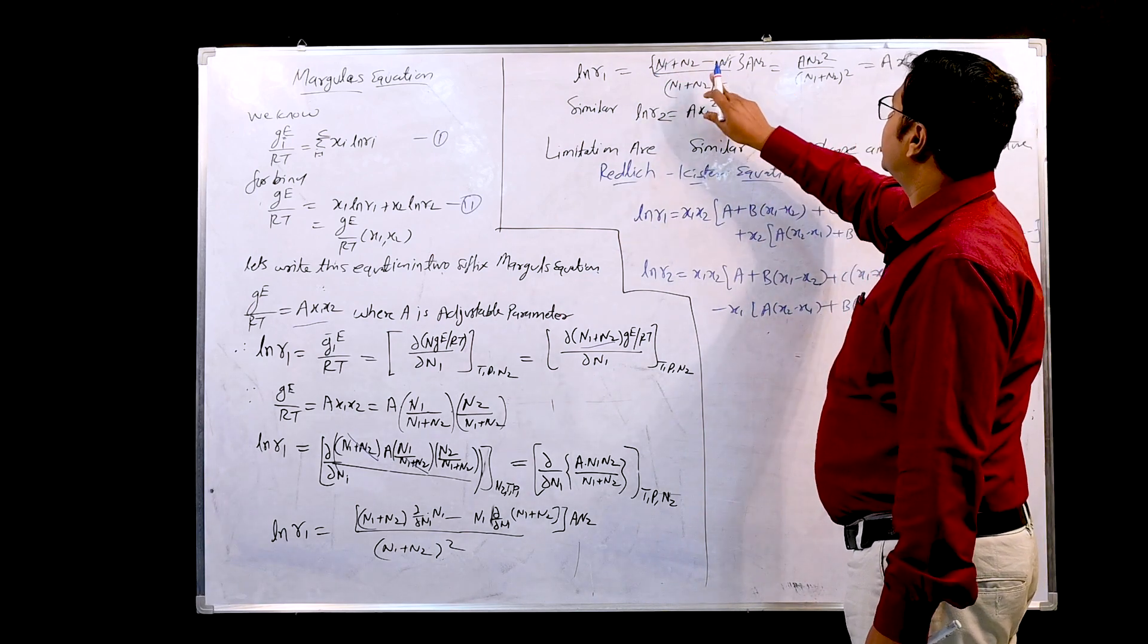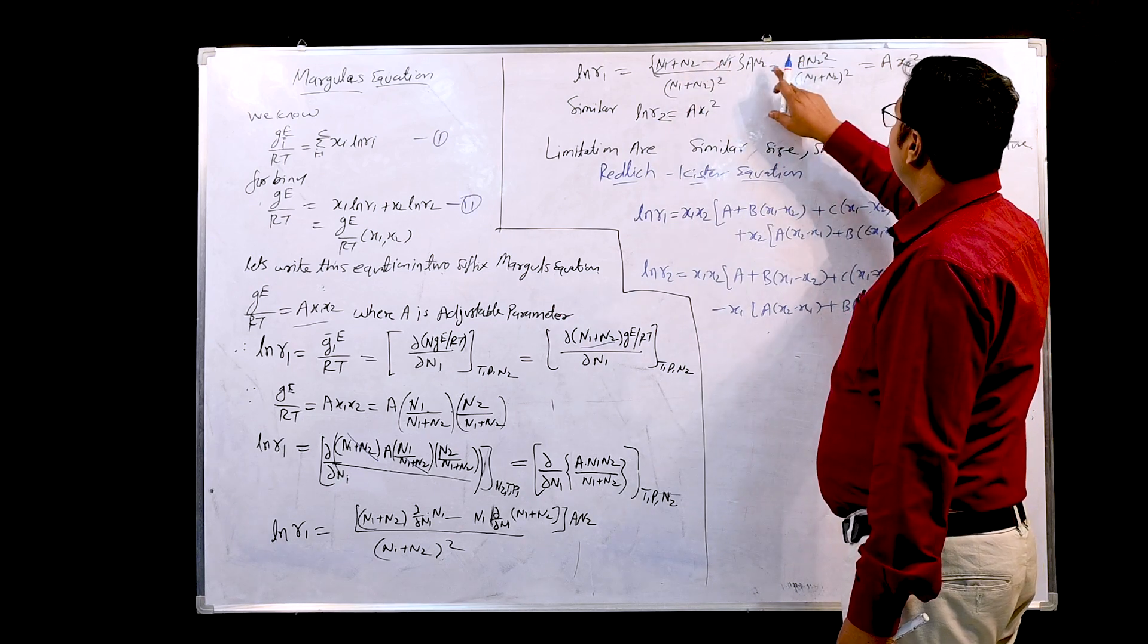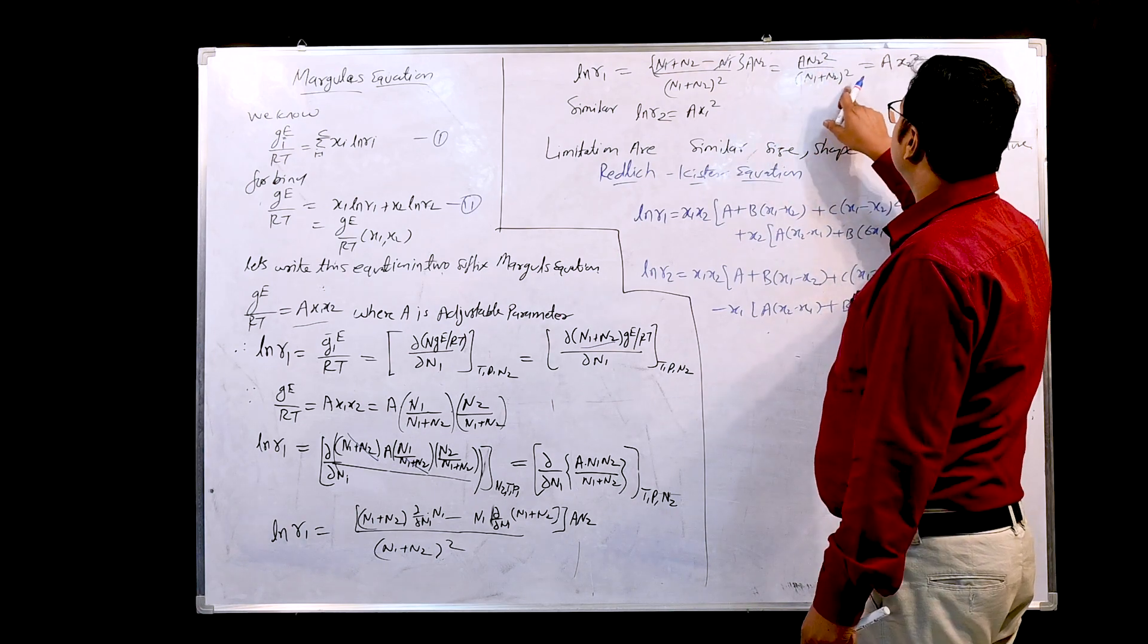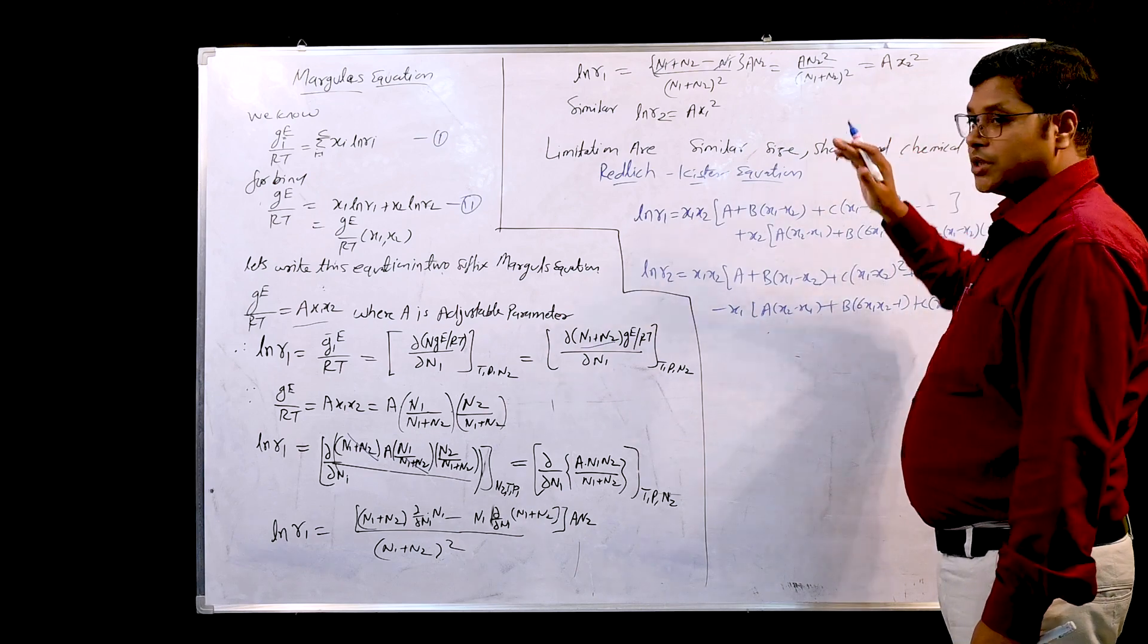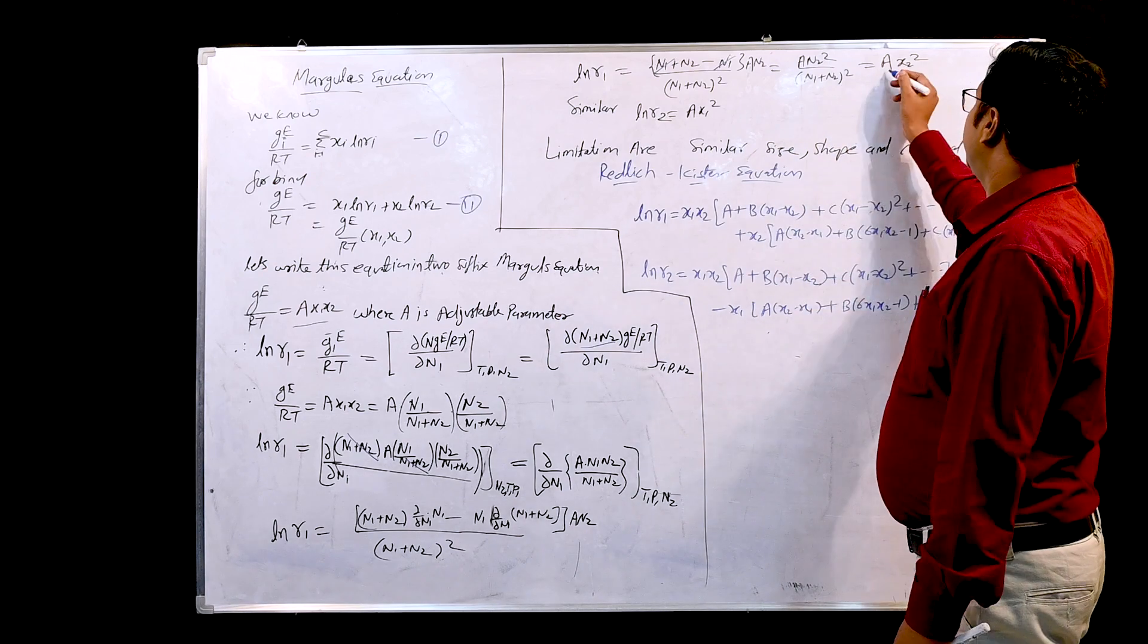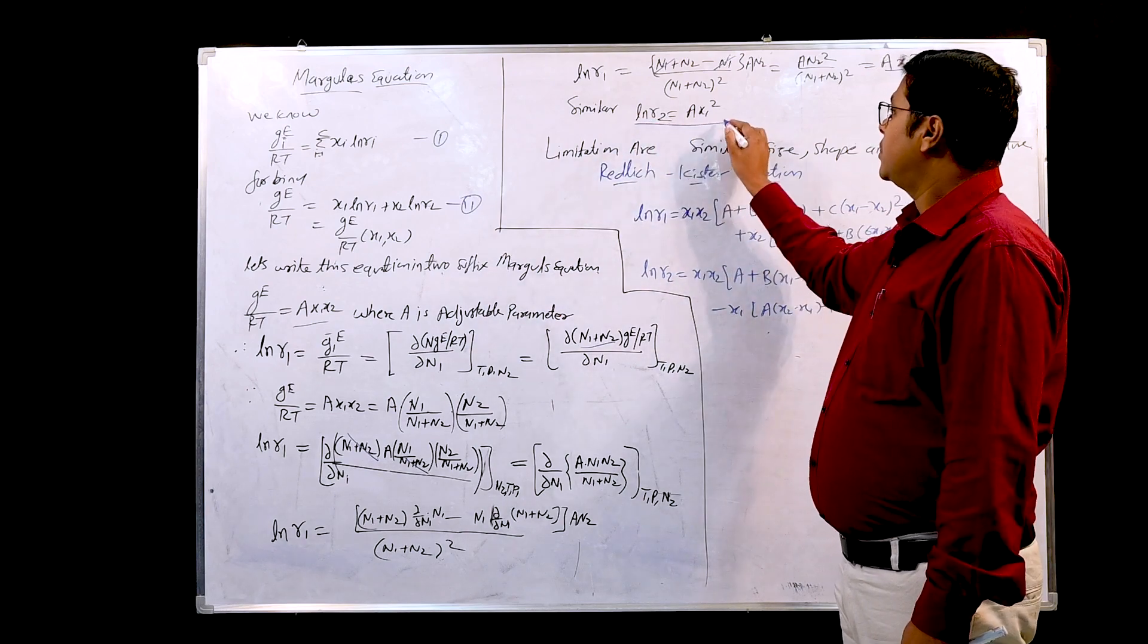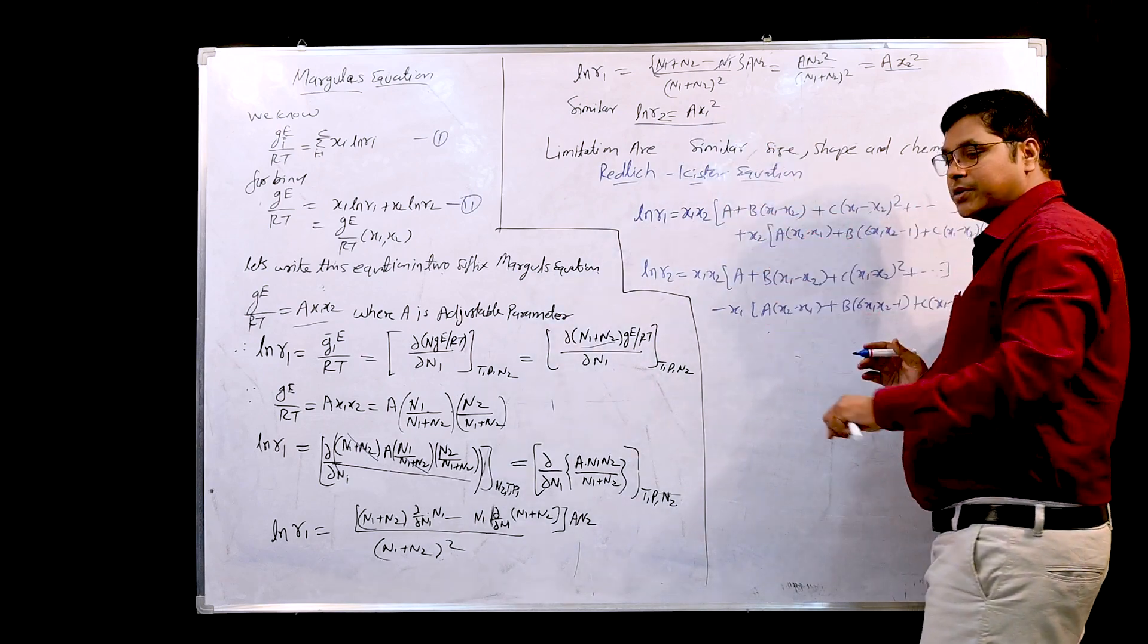n1 and n1 will be cancelled, so what is remaining? n2. Therefore, A n2 into n2, so A n2 square upon (n1 + n2) square, and n2 upon n1 plus n2 is nothing but x2. So we can write A x2 square. Similarly, if we work, we will get the expression for ln gamma 2 and that will become A x1 square.